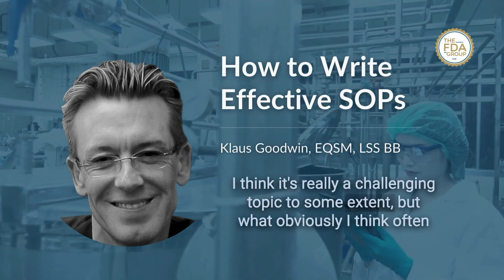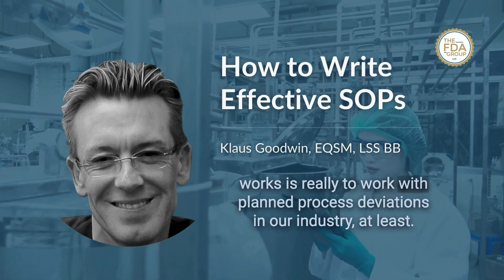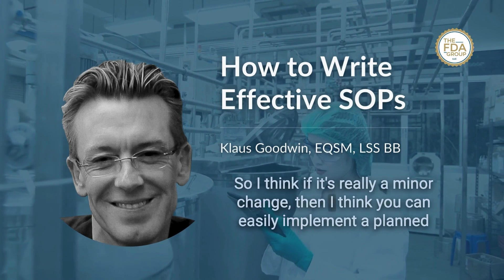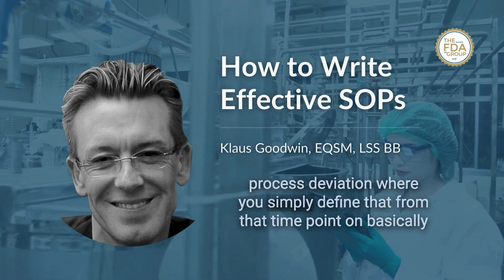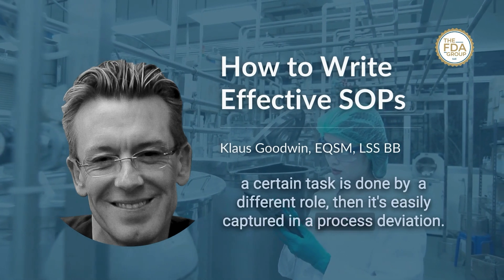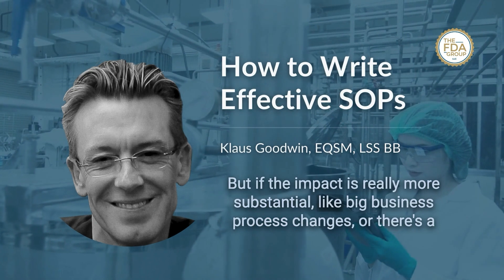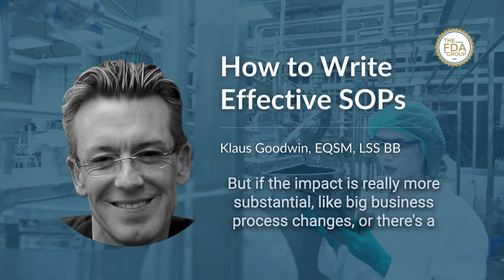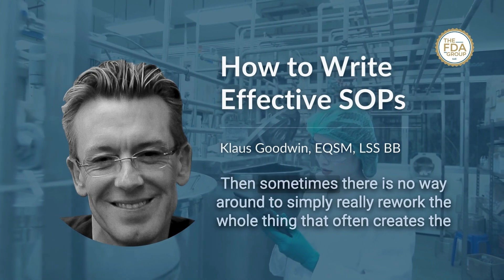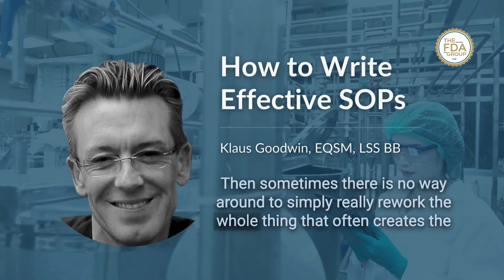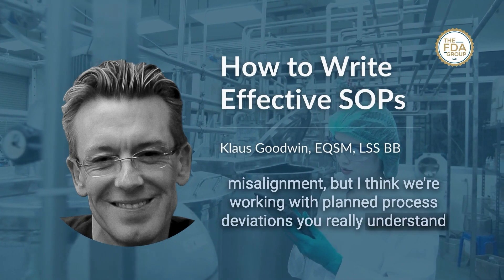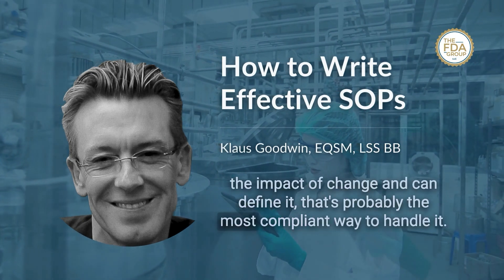Managing SOP changes is a challenging topic, but what often works in our industry is using planned process deviations. For a minor change — such as a certain task being done by a different role — you can implement a planned process deviation to capture it easily. But if the impact is more substantial, like a business process change, reorganization, or company acquisition, there may be no way around fully reworking the SOP. Working with planned process deviations, where we understand the impact of change and can define it, is probably the most compliant way to handle it.